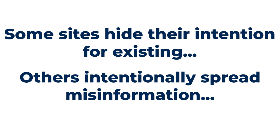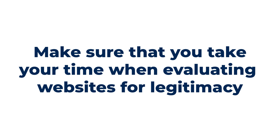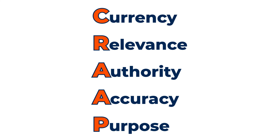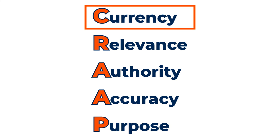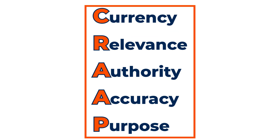Remember that some sites will go to a great deal of trouble to hide their intention for existing. So if it isn't readily apparent what the site is about, it might take you some time to determine whether the information is reliable or relevant to your research. It's a good idea to check several things about a website before determining its reliability — don't just rely on one piece of the CRAAP test. For instance, relying on when the site was last updated or on its creators alone is no good. Each step of the CRAAP test will give you the necessary clues to determine whether any information resource you come across is reliable.